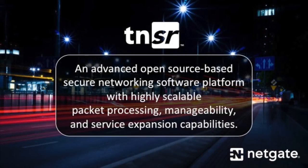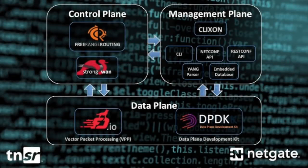Tensor is an advanced, open-source-based, secure networking software platform with highly scalable packet processing, manageability, and service expansion capabilities. It is built on a collection of open-source software packages, including vector packet processing, data plane development kit, free-range routing, and more. The key takeaway is that open-source technology allows us to modularize secure networking features and functions into management, control, and data planes.